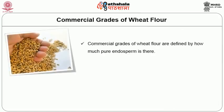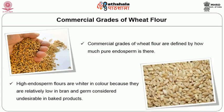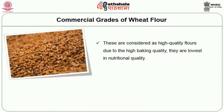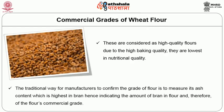There are certain commercial grades of wheat flour, defined by how much pure endosperm is present. High endosperm flours are whiter in color because they are relatively low in bran and germ, which are considered undesirable in baked products. Although these are considered high quality flours due to their high baking quality, they are lowest in nutritional quality. The traditional way for manufacturers to confirm the grade of flour is to measure its ash content, which is highest in bran, indicating the amount of bran in flour and the flour's commercial grade.